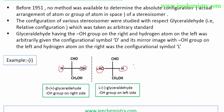In the mirror image, the OH will shift from the right side to the left side. This original form is called D configuration. In glyceraldehyde, D configuration is arbitrarily assigned to the form with OH on the right side.